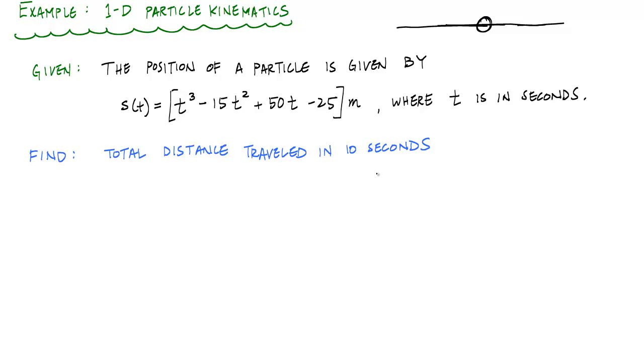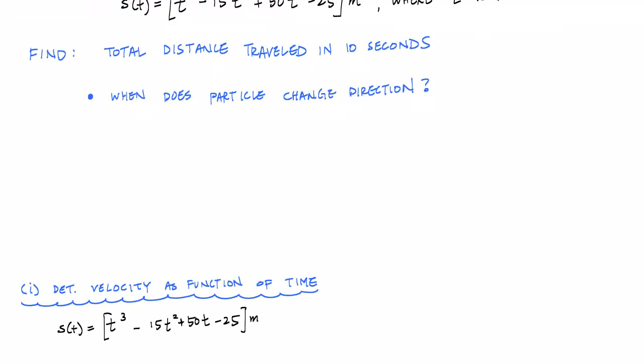First, that's going to involve determining the velocity as a function of time and finding when the particle stops or comes to rest, or when the velocity equals zero. That's going to tell us when the particle changes direction. So what we want to find is when does the particle change direction.